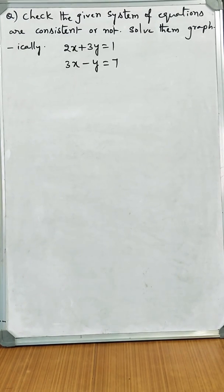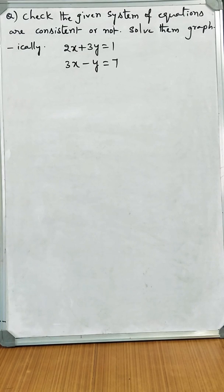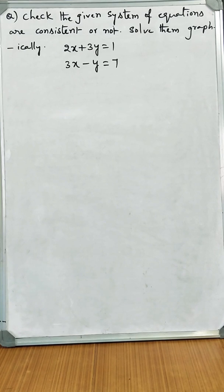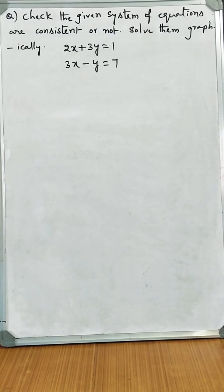As we know, linear equations in two variables or one variable represent a straight line. To draw a straight line, we need at least two points. So before going to the graph, let us see whether the given equations are consistent or not.